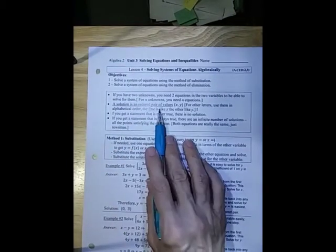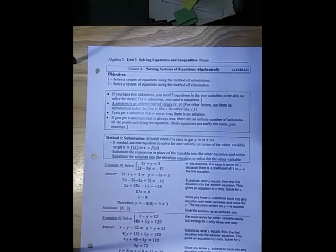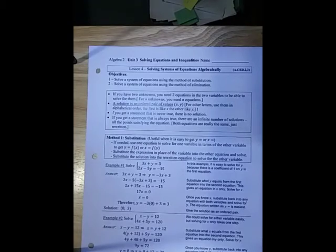A solution is an ordered pair of values that make both equations true. If you get a statement as you're solving and it's never true, there's no solution. If you get one that's always true, like 3 equals 3, there would be an infinite number of solutions satisfying the equation. You would need to figure out exactly how to write those infinite solutions.